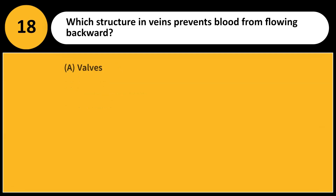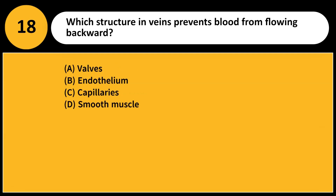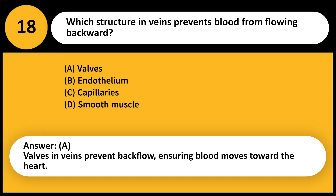Which structure in veins prevents blood from flowing backward? A. Valves. B. Endothelium. C. Capillaries. D. Smooth muscle. Answer: A. Valves in veins prevent backflow, ensuring blood moves toward the heart.